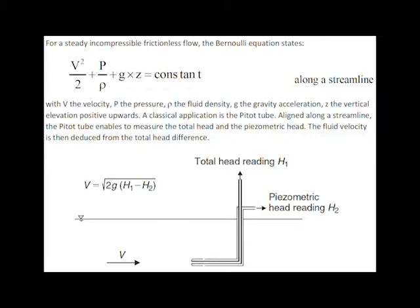A classical application is a pitot tube, aligned along a streamline. The Bernoulli equation may be applied between the upstream flow and the stagnation point at the tip of the pitot tube, and in turn, the stagnation pressure may give the fluid velocity.